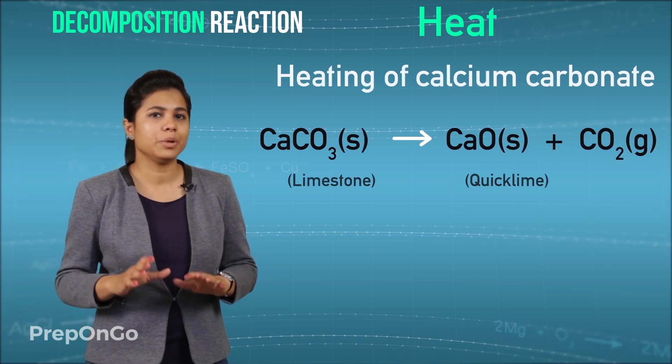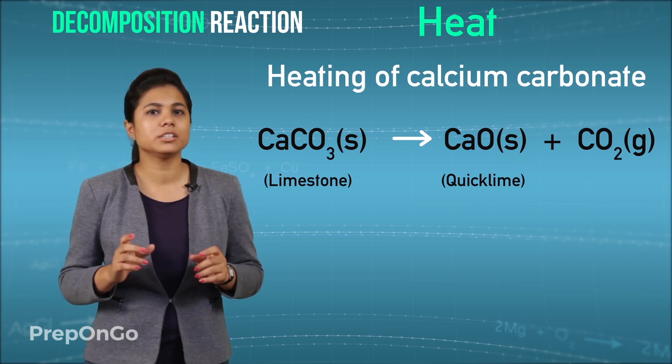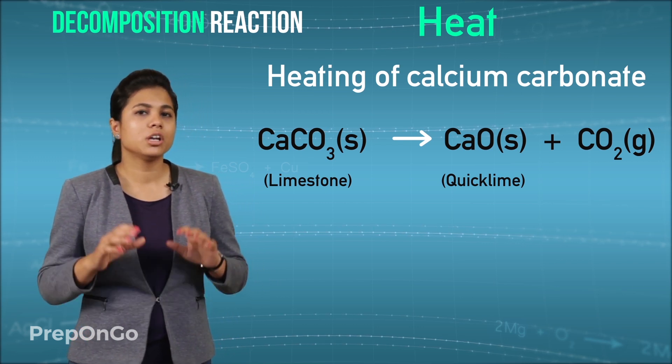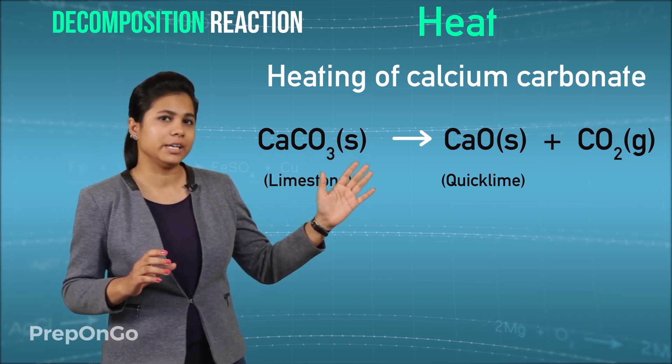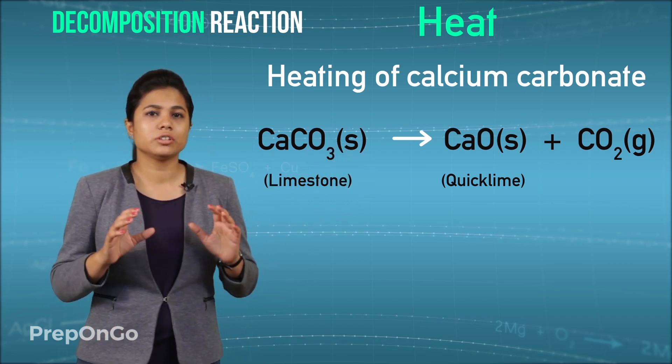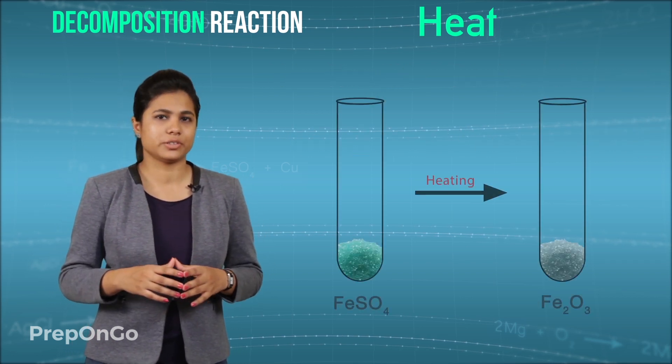The first example is heating of calcium carbonate. We have studied about calcium carbonate in the combination reaction also. When you heat calcium carbonate it breaks into calcium oxide and carbon dioxide. This calcium oxide is also called as quick lime. It is used in various industries.